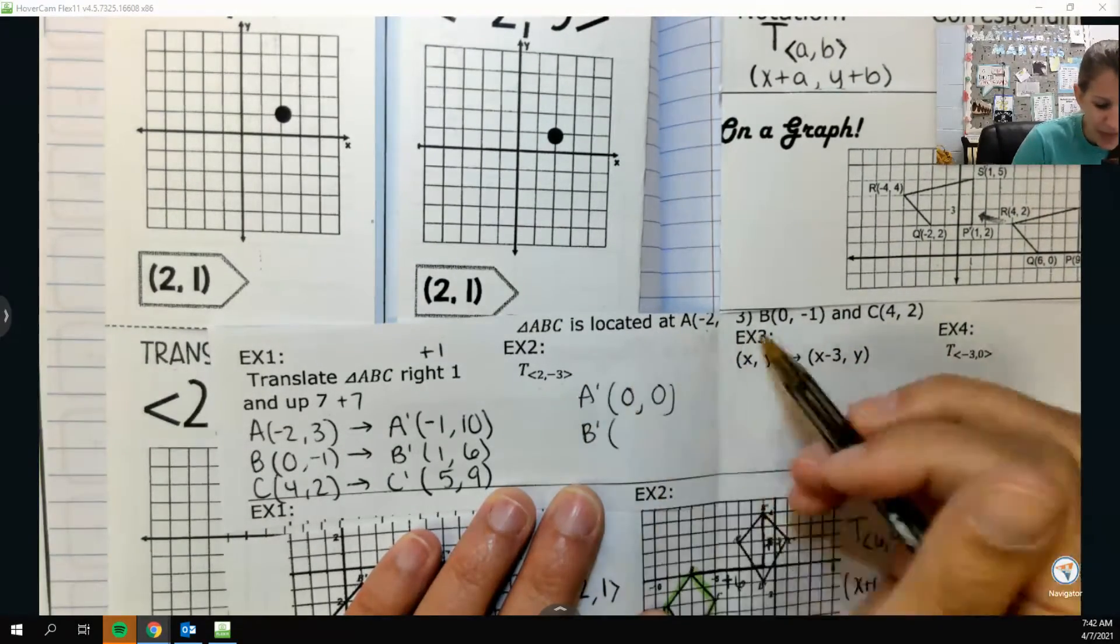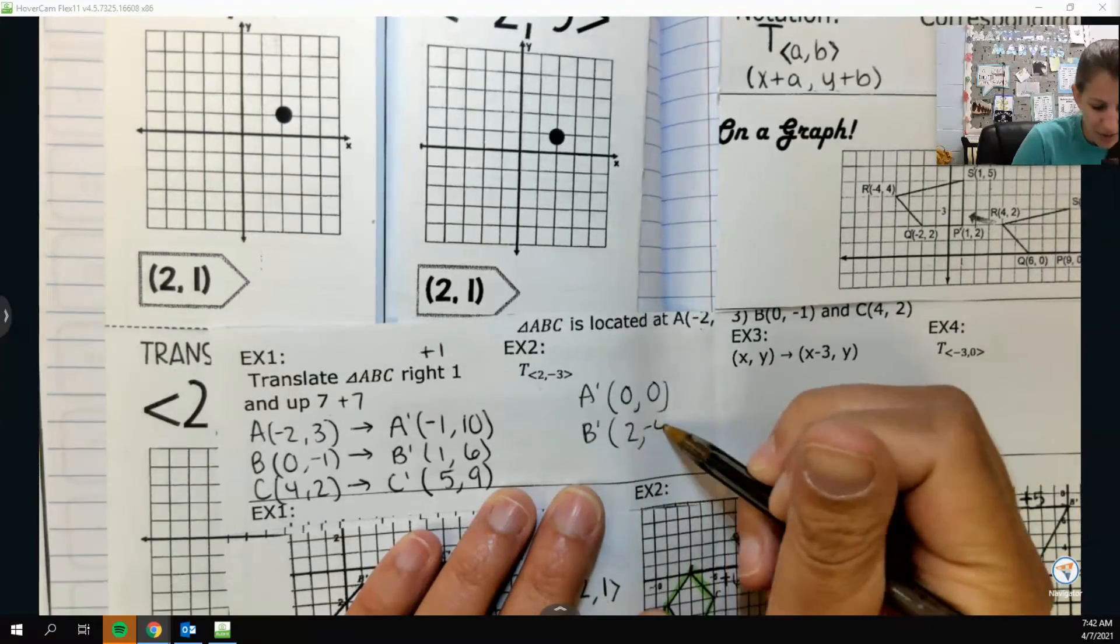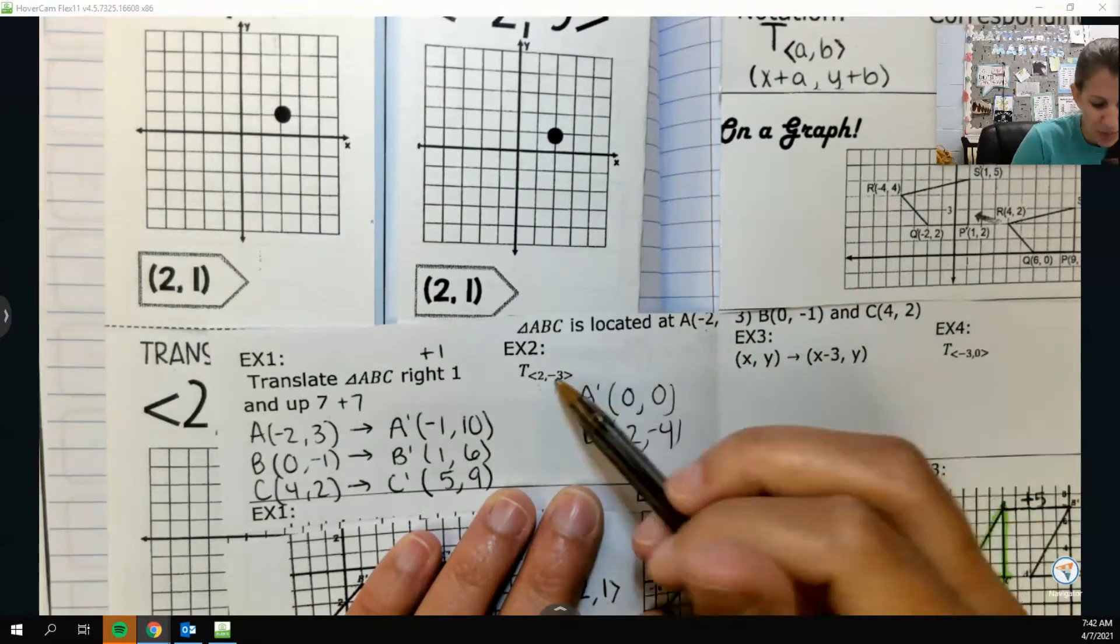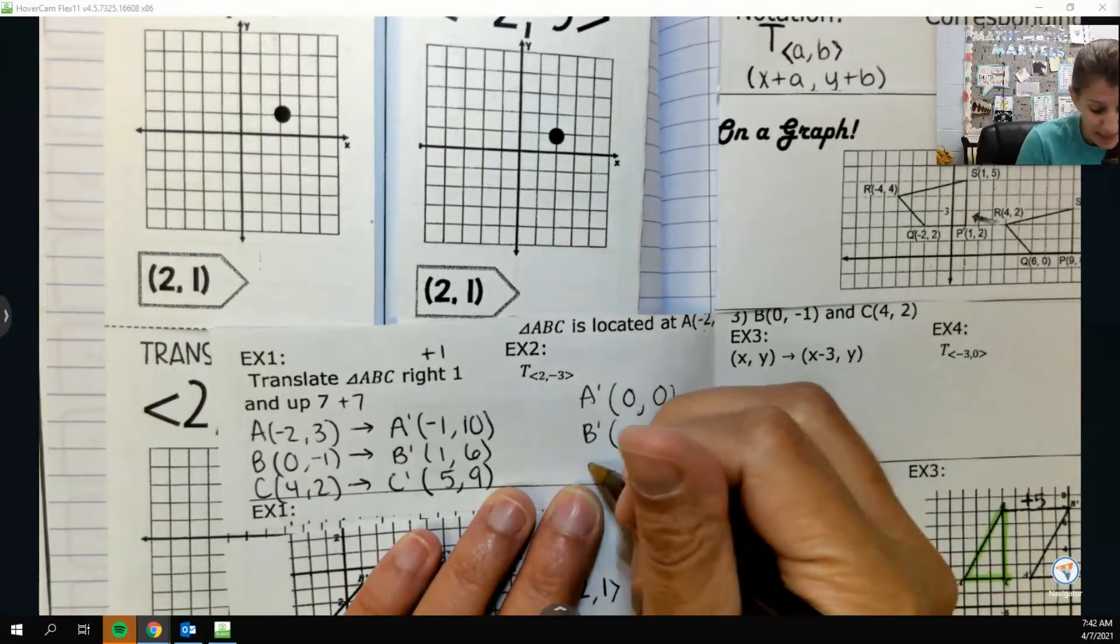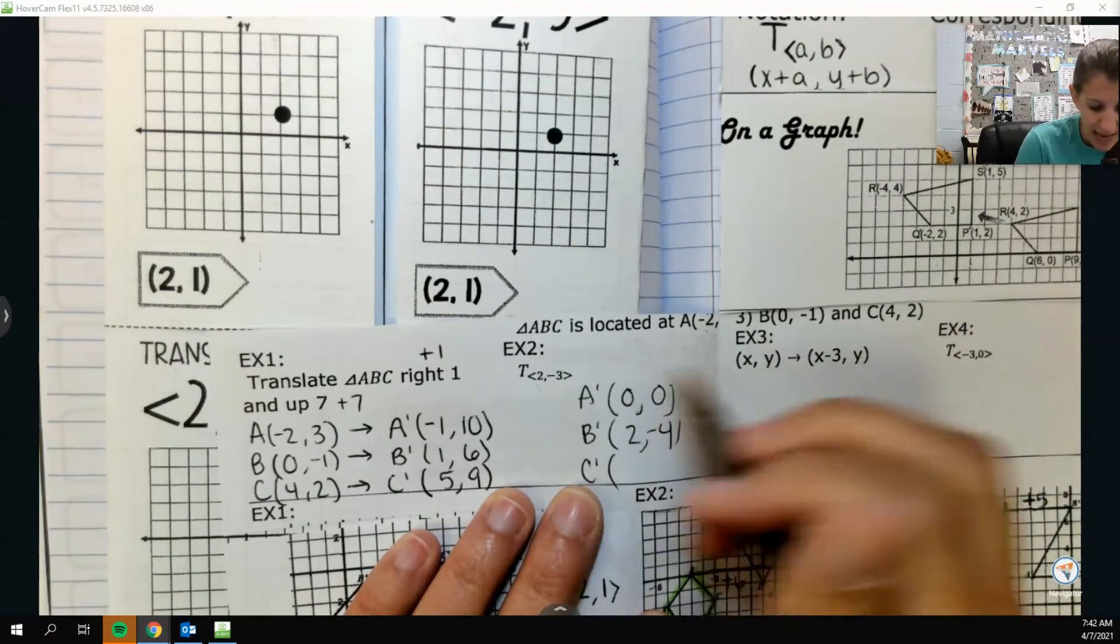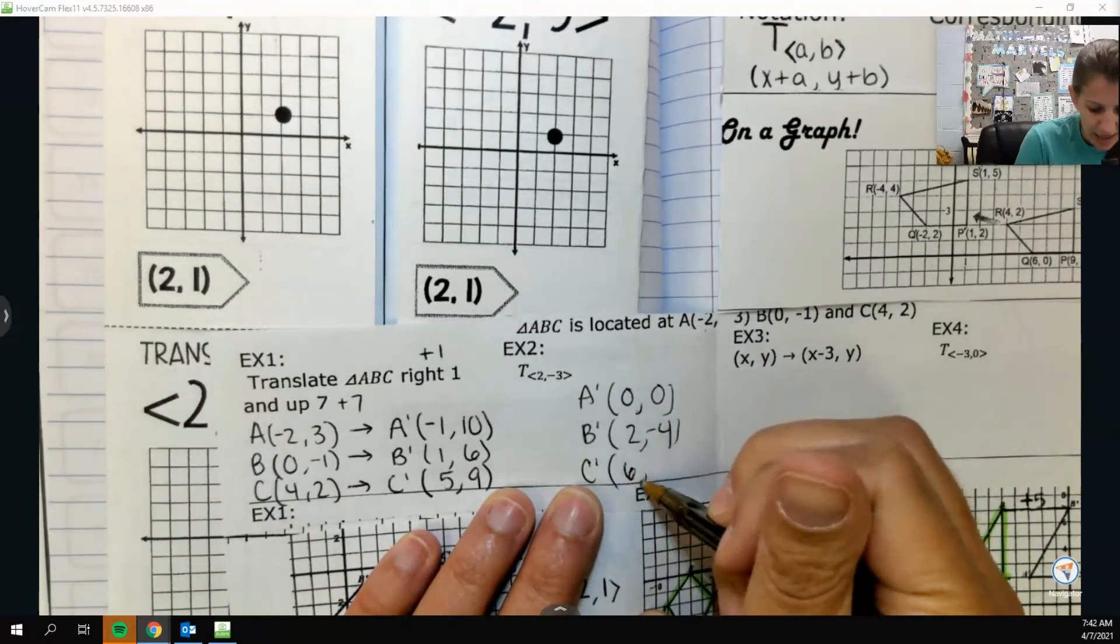B prime would be at 2, negative 4. I'm just adding these points together. That's it. And then c prime would be at 6, negative 1.